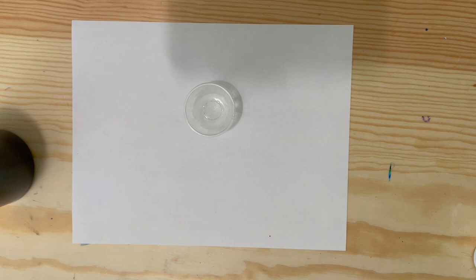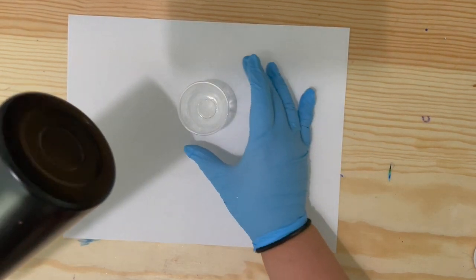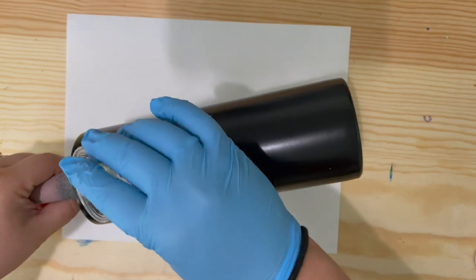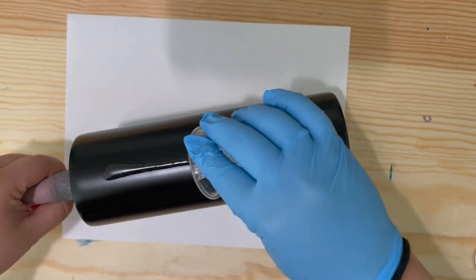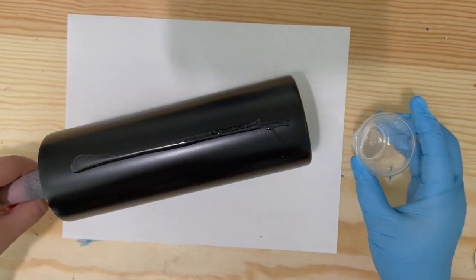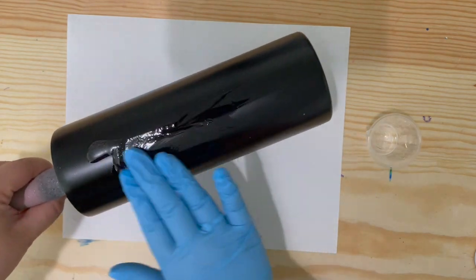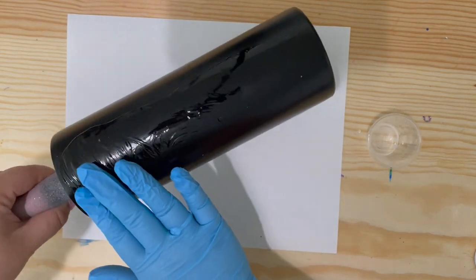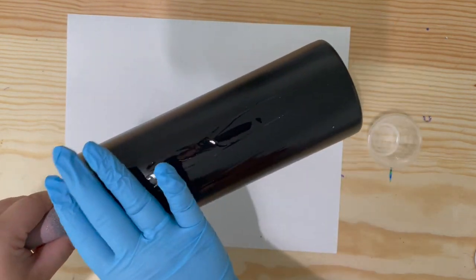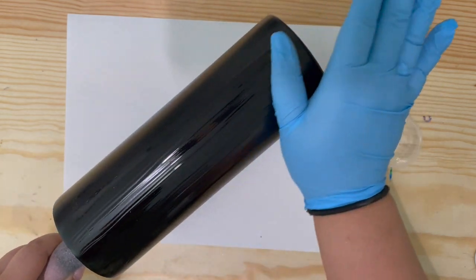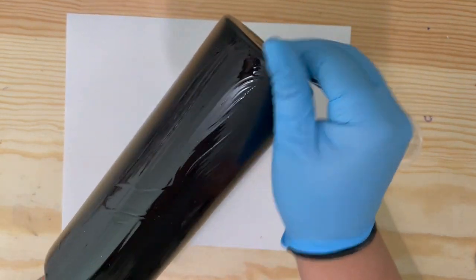And here I just mix 5 milliliters of epoxy. I did 2.5 milliliters of part A and 2.5 milliliters of part B. Why is it so hard to say milliliters?